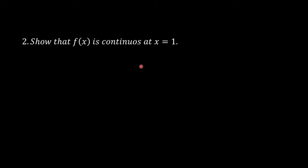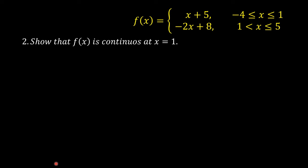We need to show that f of x is continuous at x equals 1. If we can show that, then the function is continuous on the closed interval negative 4 to 5.